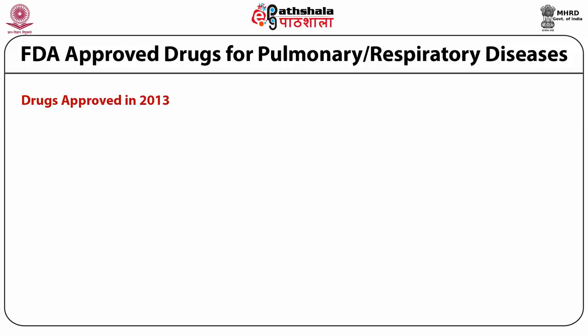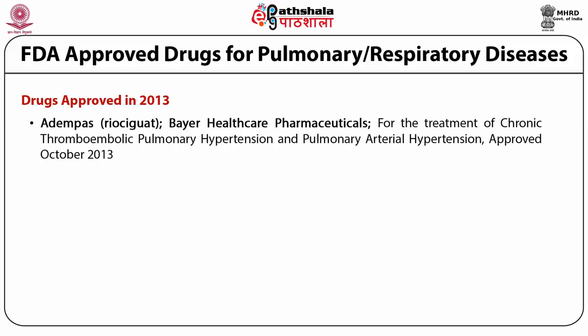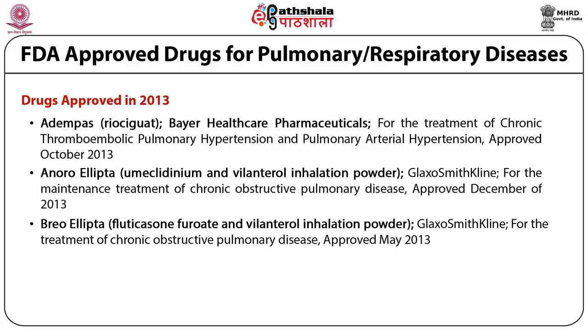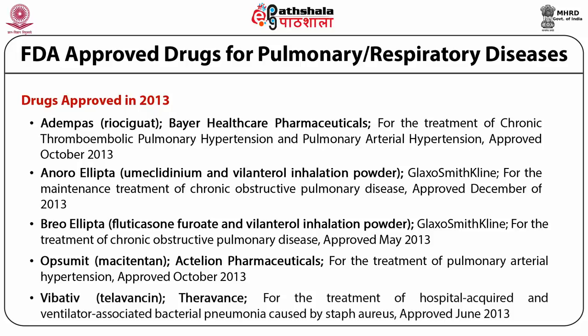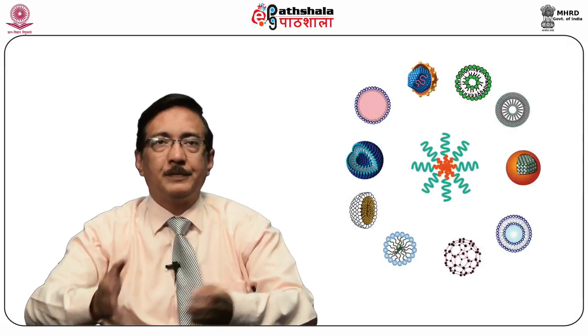In 2013, drugs approved by USFDA included Adempas (Riociguat) by Bayer Healthcare Pharmaceuticals for chronic thromboembolic pulmonary hypertension and pulmonary arterial hypertension. Anoro Ellipta (Umeclidinium/Vilanterol inhalation powder) by GSK for maintenance treatment of COPD. Opsumit (Macitentan) by Actelion Pharmaceuticals for pulmonary arterial hypertension. Vibativ (Telavancin) developed by Theravance for hospital-acquired and ventilator-associated bacterial pneumonia caused by Staph aureus, approved in June 2013.